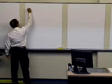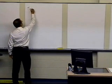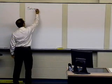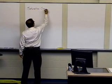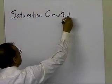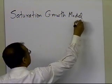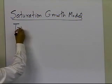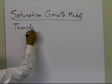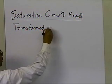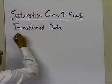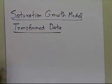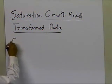In this segment, we're going to talk about how to derive the formula for saturation growth model. The approach we're going to take to find the saturation growth model constants is by using transformed data approach. So we'll talk about that in a little bit what that means. Let's go ahead and state the problem.